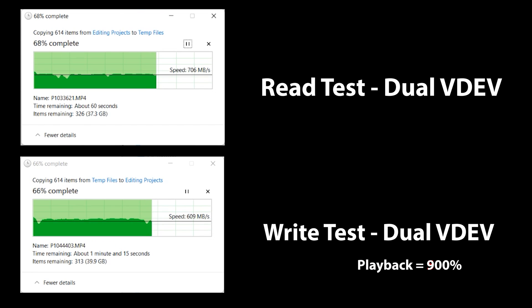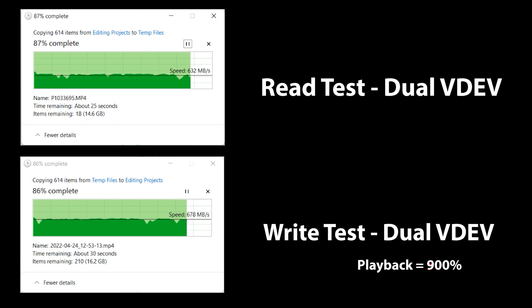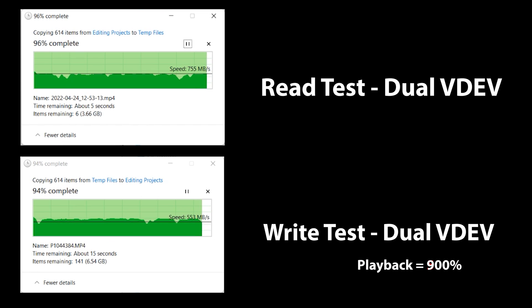As I mentioned earlier, this performance varies based on how full the first array is when you add the second one. The less free space available on the first array, the less the pool will write to the original VDAV. Even though it tries to write to both at the same time, it's going to favor the one that has more storage space. Obviously, when you saturate your network, there isn't any need to get more exotic in your VDAV configuration.